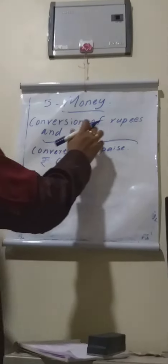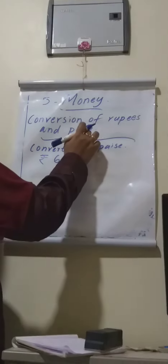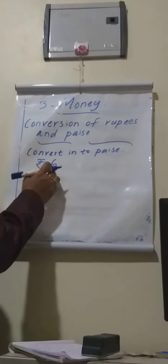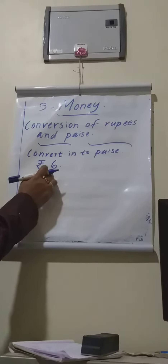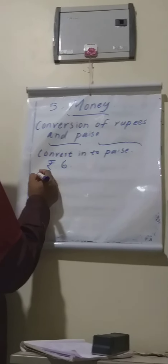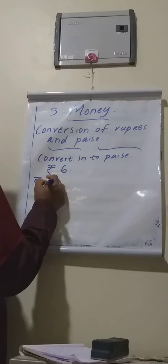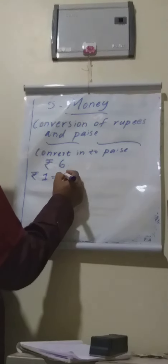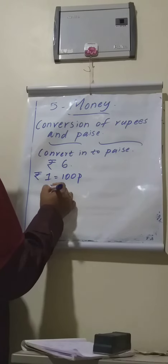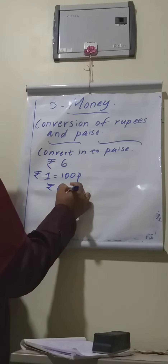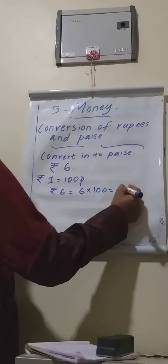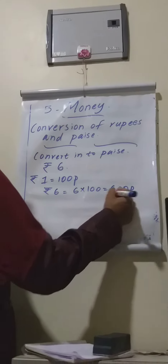Next, conversion of rupees and paisa. How we change rupees into paisa, discuss it now. You listen: 1 rupee is equal to 100 paisa. So, rupee 6 is equal to 6 into 100, is equal to 600 paisa.